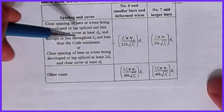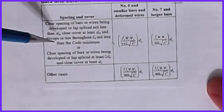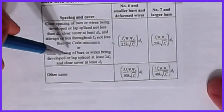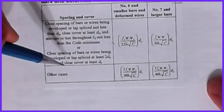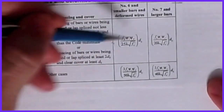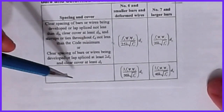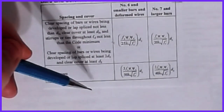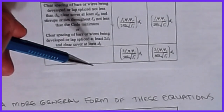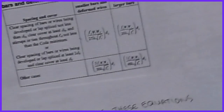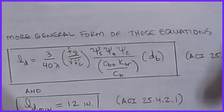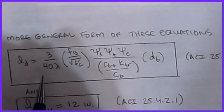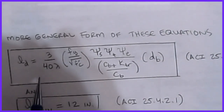The simplified formula applies when: the clear spacing of bars being developed or lap spliced is not less than db, clear cover is at least db, and stirrups or ties throughout ld are not less than code minimum; OR clear spacing is at least 2db and clear cover is at least db. If either of those cases applies you use the simpler formulas. ACI also gives a more general version of the equation that gives slightly better results but requires computing another parameter.